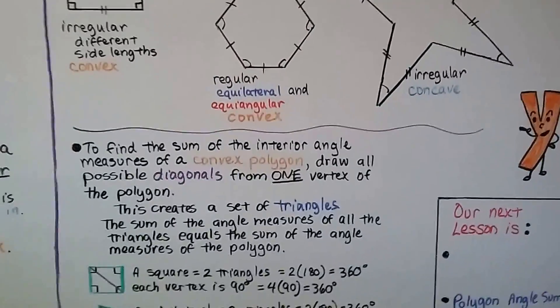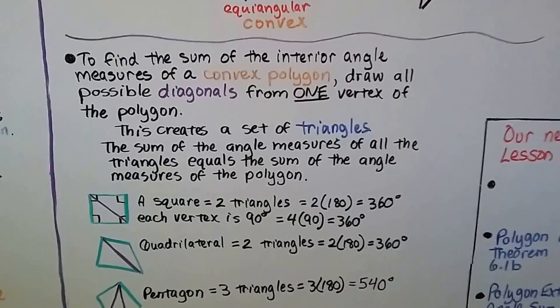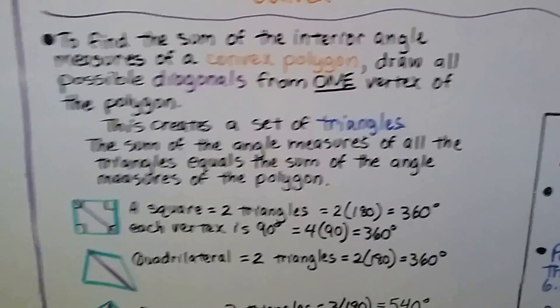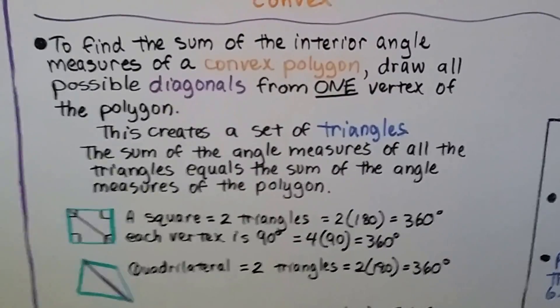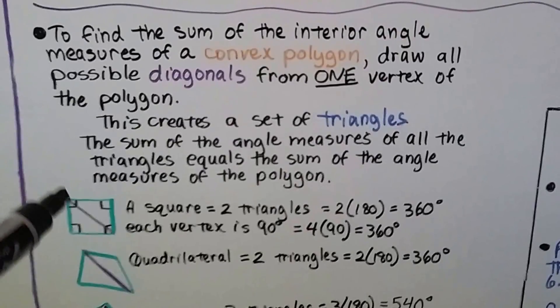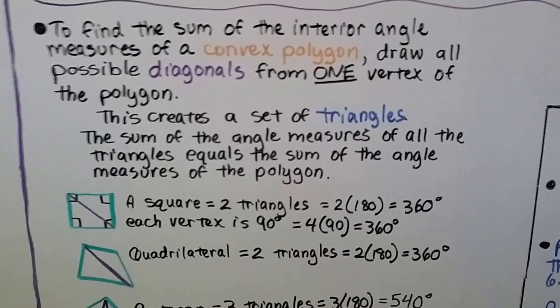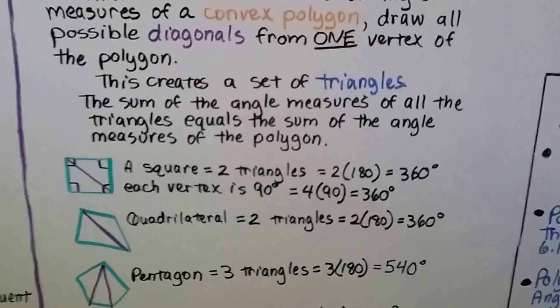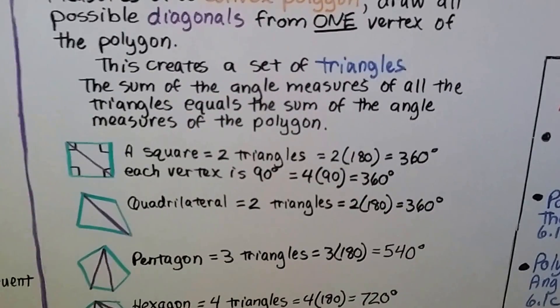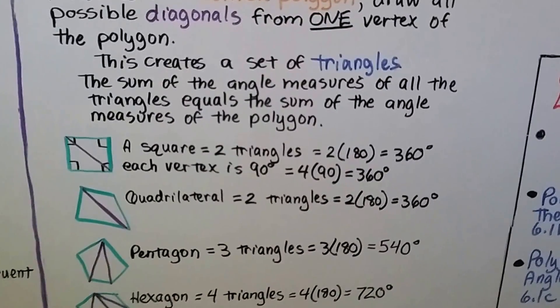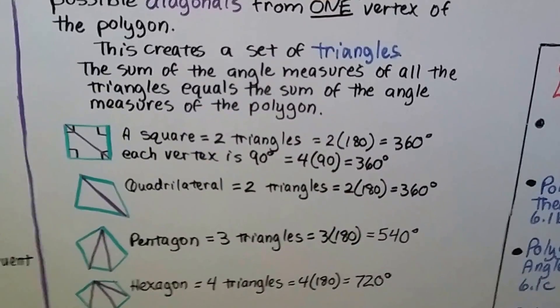To find the sum of the interior measures of a convex polygon, we draw all possible diagonals from one vertex of the polygon. This creates a set of triangles. The sum of the angle measures of all the triangles equals the sum of the angle measures of the polygon.